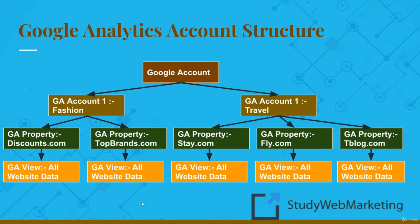As you can see on your screen, at the top of the tree structure you have a Google account, which can be your Gmail account or any other Google account that you use to access any of the Google services. Under this account, the company has created two Google Analytics accounts — first one for fashion and the other one representing the travel business.